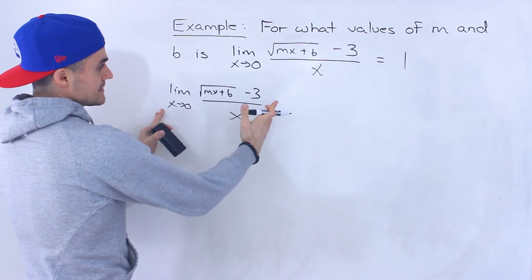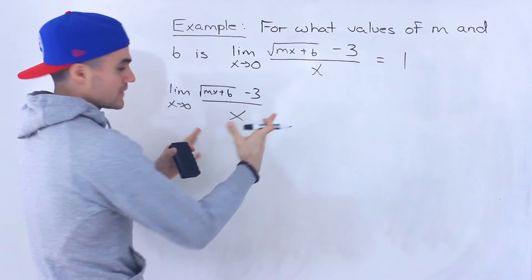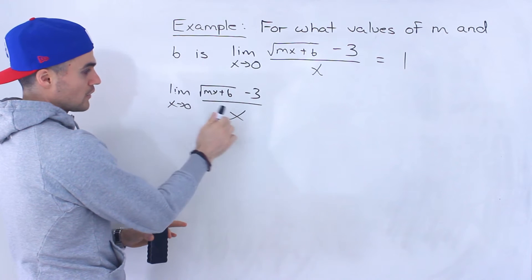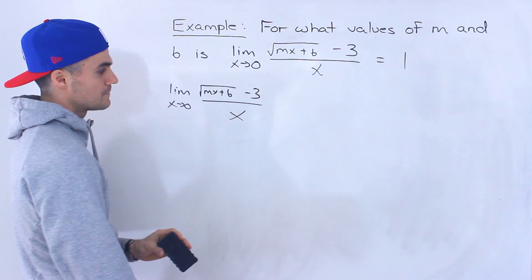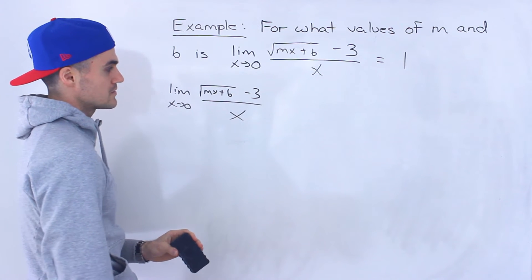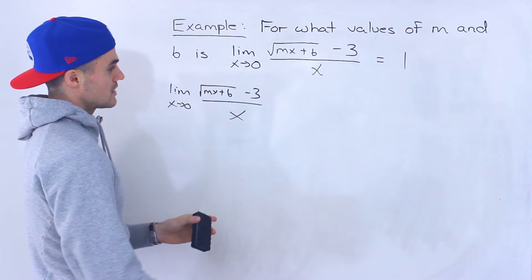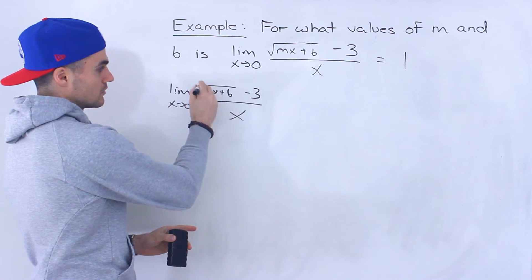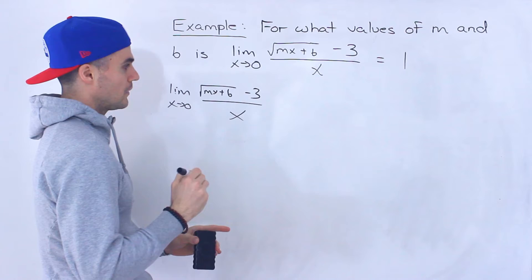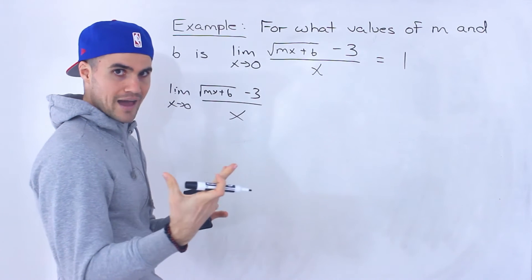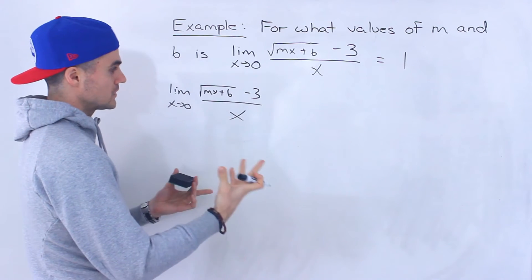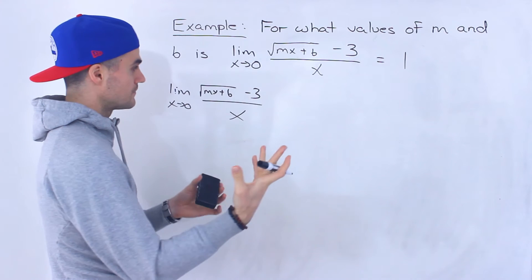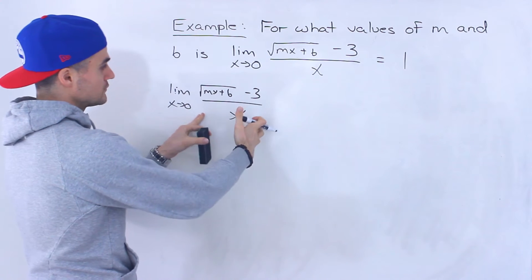Notice that this limit — first off, we can't do a direct substitution, because if we plug in 0 for x, the denominator is going to be 0. So direct substitution is not going to work. And notice that we have this square root here — this radical. Whenever we have that, in most cases what we're doing to solve the limit is we're rationalizing it. And that's what we're going to have to do here.